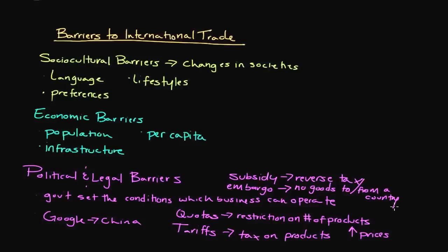All of these items represent key barriers to international trade and have to be considered to operate successfully. You have to consider the way the government structures things, understand the economics of the country you're going into to position your product in a way that will sell, and tailor your product to the differences in the culture of that particular constituency. Rarely will a business look at just one or two of these — usually we're looking at each and every one to adequately assess the level of competitiveness in a particular market.